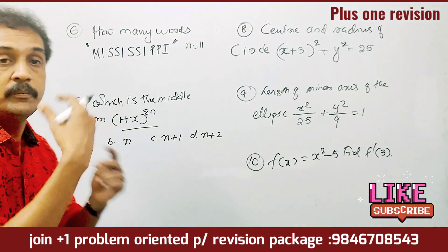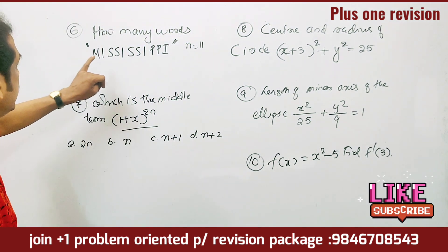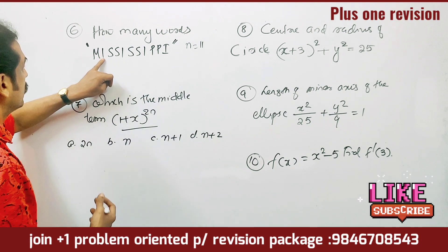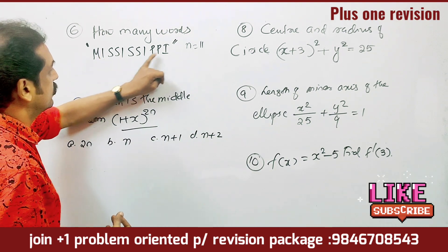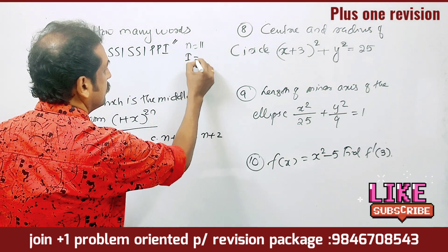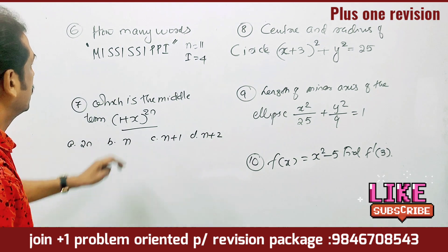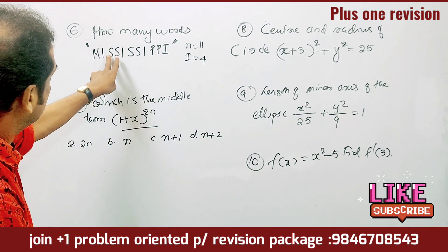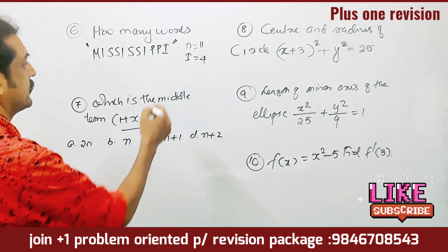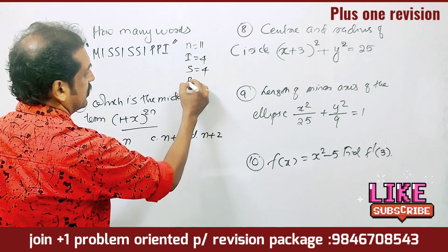Now identify the repeated letters. The letter I appears 4 times, the letter S appears 4 times, the letter P appears 2 times.